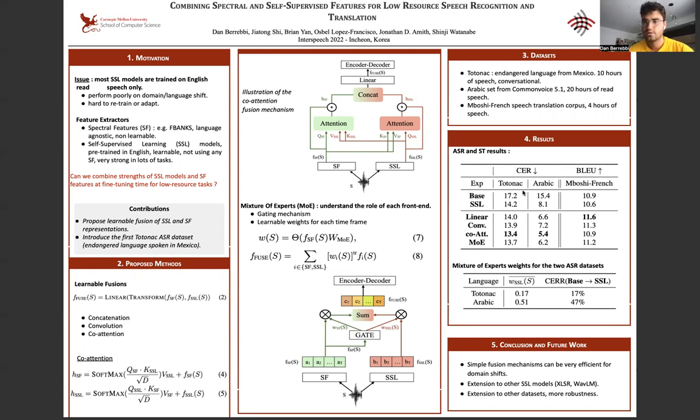So for ASR results, let's look at those two columns here, Totonac and Arabic. And the metric is the character error rate, so lower is better. And we have first a great progression from the baseline encoder-decoder model to the model with same architecture but self-supervised model as the front-end. So we have a diminution of 3% absolute for the Totonac and more than 7% absolute for the Arabic. So this is already a great improvement with those models for both datasets and mostly more for Arabic than for Totonac.